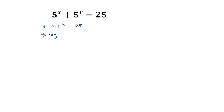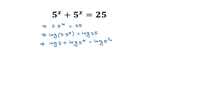Now taking log of both sides, we can write log of 2 times 5 to the power x is equal to log of 25. Applying the formula log(a times b) equals log(a) plus log(b), we can write this as log 2 plus log of 5 to the power x is equal to log of 25, which is 5 squared.